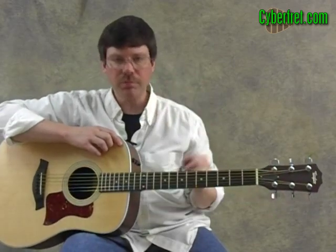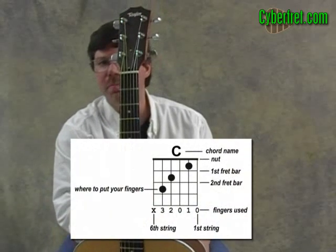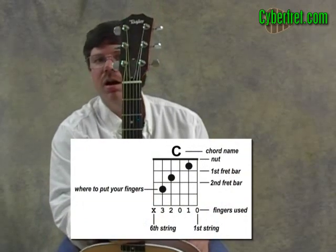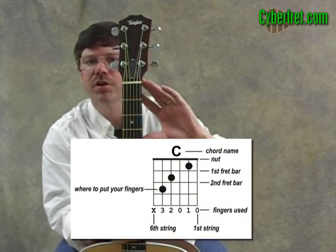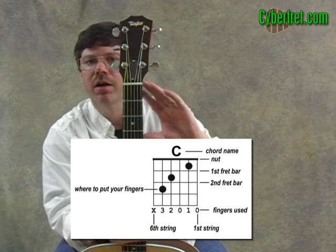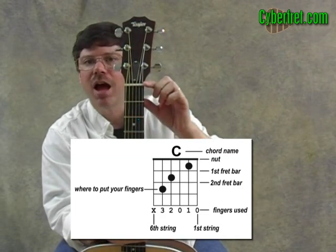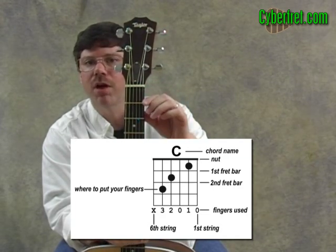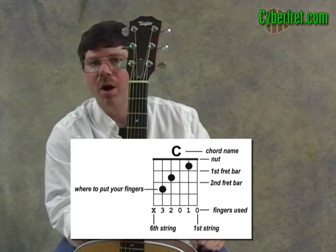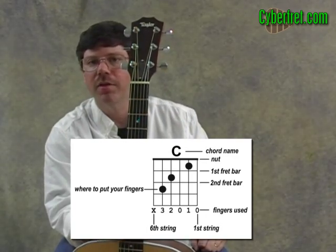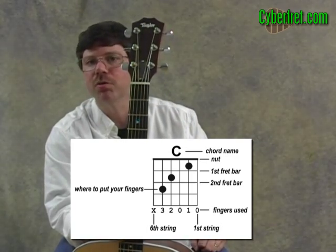Just remember that the chord chart is a picture of a section of the neck of your guitar. The lines going across are the fret bars, the dots tell you where to put your fingers, and the numbers underneath indicate which fingers to use.